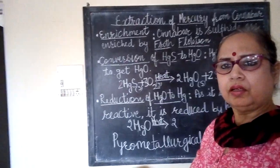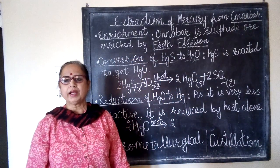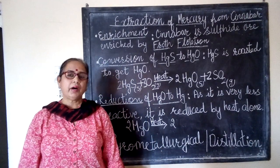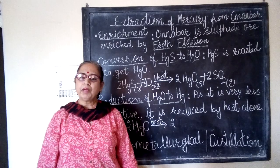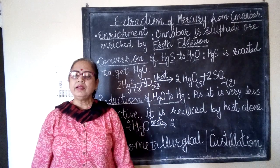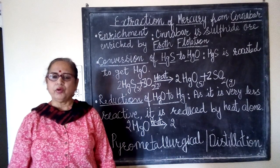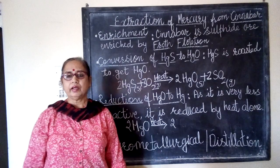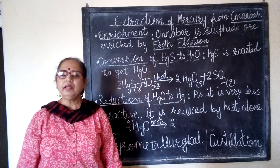The pyro-metallurgical or distillation process produces mercury in its liquid form. It is produced above its boiling point and then its vapors are condensed. The mercury obtained by this method is 99.9% pure, useful for all purposes. If you require more purity, it can be further refined by multiple distillation.